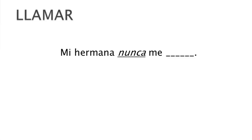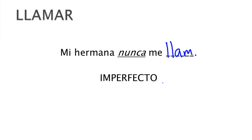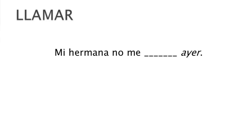Our next verb is llamar — to call. Mi hermana nunca me llamaba — she was off at school for a few years, she never used to call me. That's imperfect, AR verb: nunca me llamaba. Now a clearer example: mi hermana no me llamó ayer. Ayer is yesterday — a specific moment in time. My sister did not call me yesterday — so we use the preterite: no me llamó.